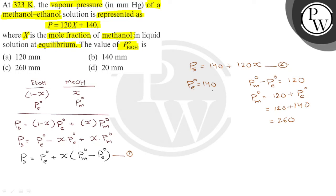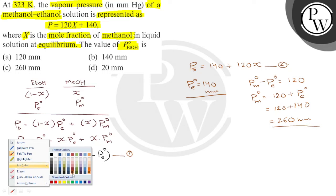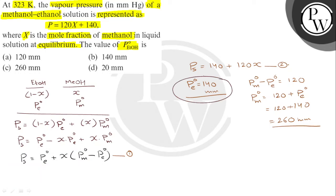These two are in mm of Hg vapor pressure. We have only one vapor pressure asked, and that is vapor pressure of ethanol, which is 140 mm. So which option is correct? Option D is correct. I hope you understood. Best of luck.